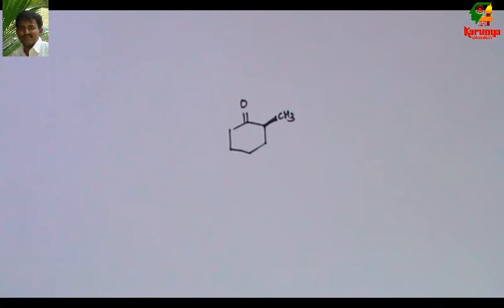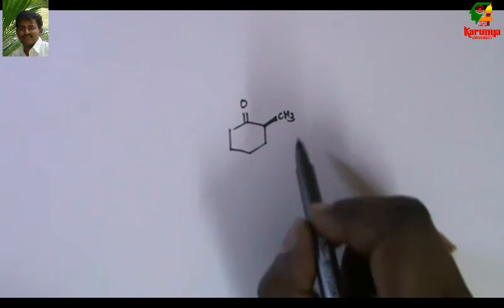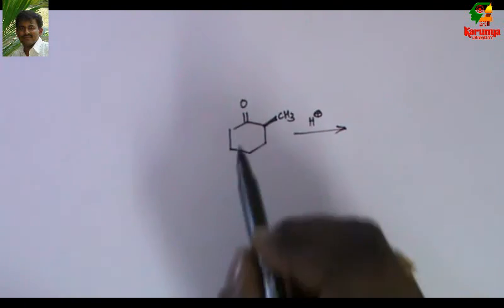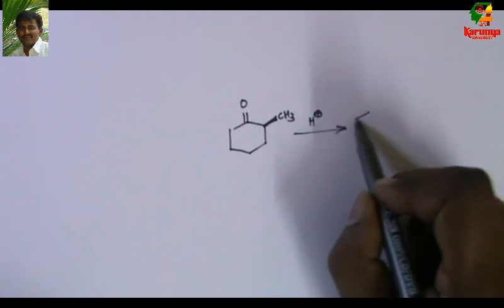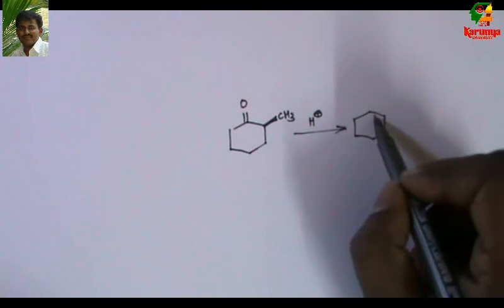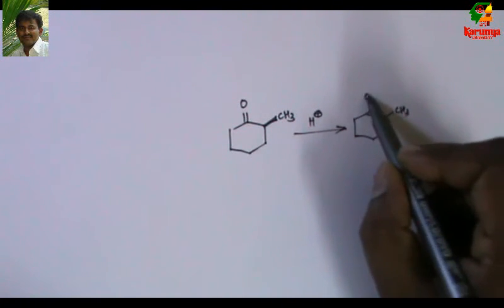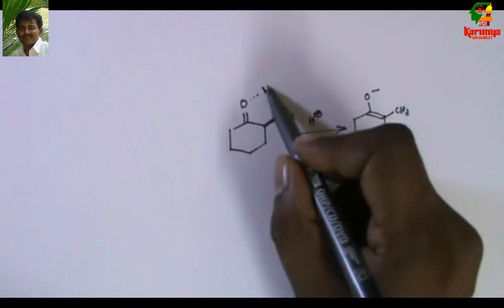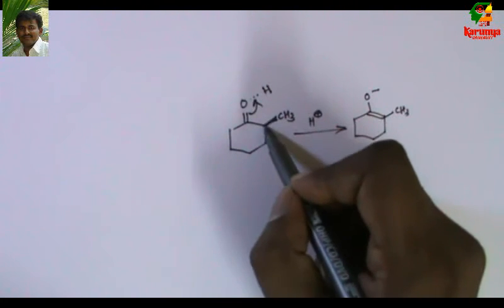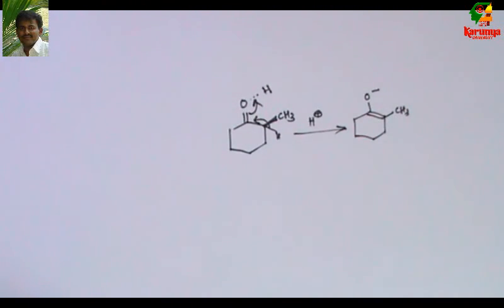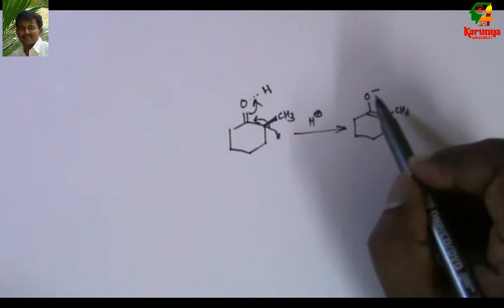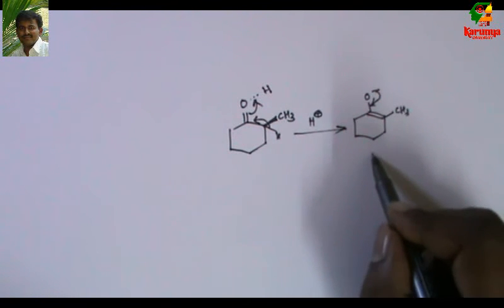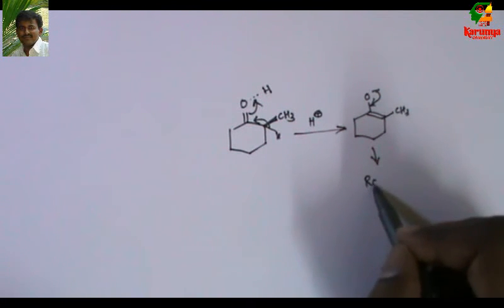For compounds like 2-methylcyclohexanone — even though the compound is chiral — if we add H⁺, enolization occurs: the proton coordinates to oxygen, and when the proton is abstracted it may return from the top or from the bottom. So what we get is a racemic mixture.